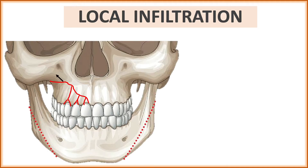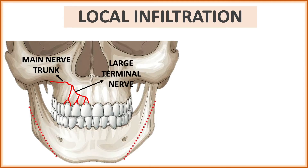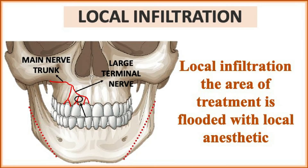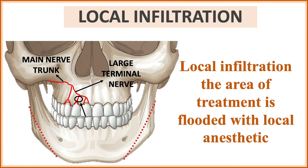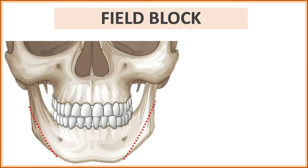Beginning with local infiltration: look at the figure. We have a main nerve trunk which is divided into two large terminal nerves, and the terminal nerve is further divided into sub-branches. If we infiltrate the anesthetic solution into these sub-branches, that is called local infiltration. In local infiltration, the area of treatment is flooded with local anesthetic solution.